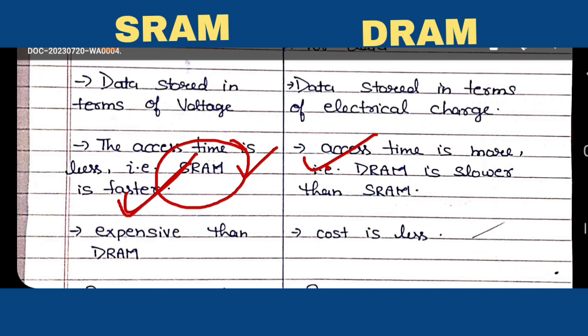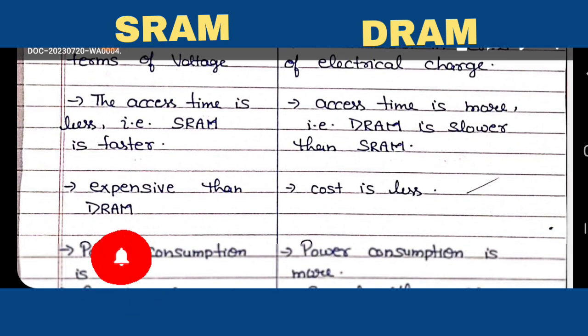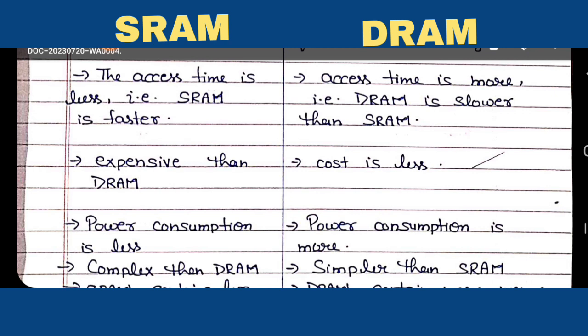DRAM is slower than SRAM. In comparison to DRAM, SRAM uses more transistors, which is why its cost is more. In DRAM, only one transistor and one capacitor — one MOS transistor and one capacitor — is used per cell, which is why its cost is less in comparison to SRAM.